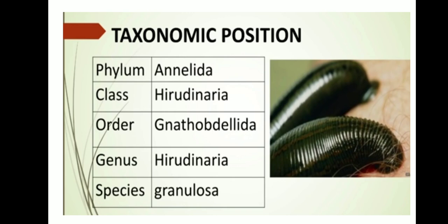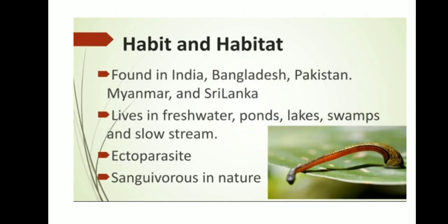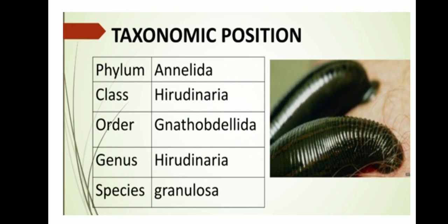First we will see about leech — the taxonomic position. Phylum: Annelida. Class: Hirudinaria. Order: Gnathobdellida. Genus: Hirudinaria. Species: granulosa. The scientific name of Indian cattle leech is Hirudinaria granulosa. The scientific name is given after the genus and species, so the zoological name of Indian cattle leech is Hirudinaria granulosa — a very important term.